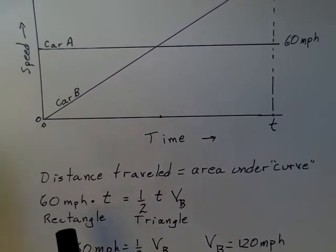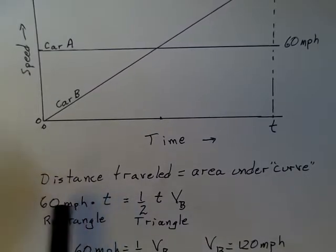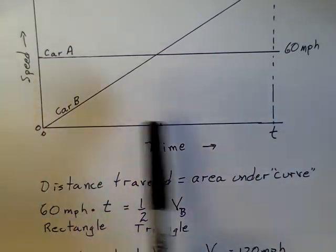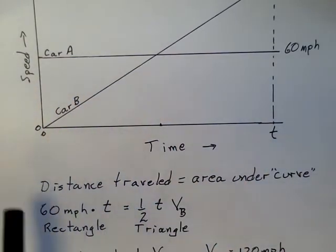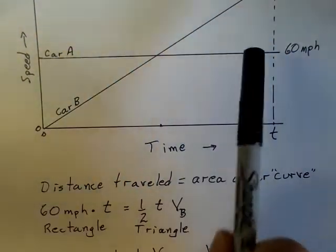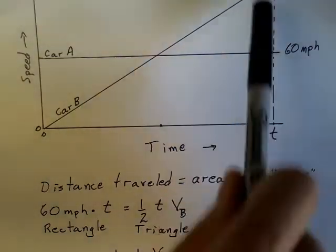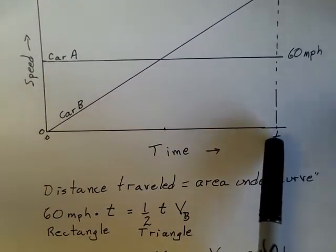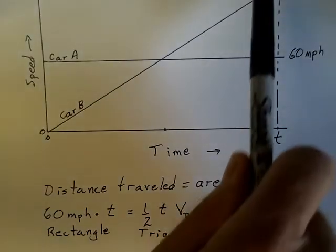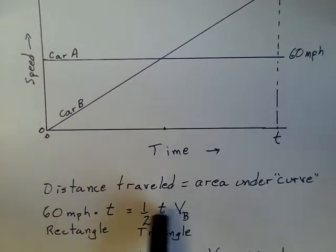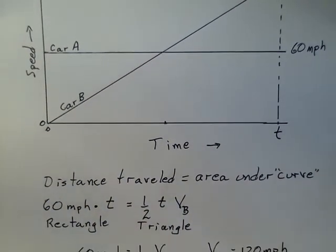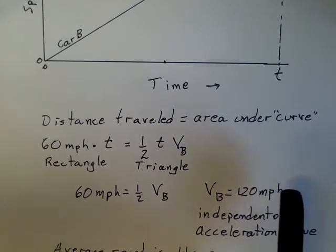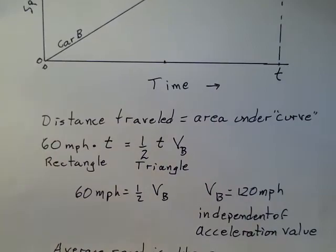What's interesting about this is that the distance traveled is the area under a curve on a graph of velocity versus time. For the case of car A, it's a rectangle. 60 miles per hour is the height of the rectangle. Time T is the long side of the rectangle. For car B, it's a triangle. And the area of a triangle is 1 half times the base times the height. So 1 half, the base is T, and the height is the final velocity of car B. The T's cancel, multiply by 2. And you find that the speed of car B is 120 miles per hour. And there's no acceleration factor in this answer. This final velocity of car B is independent of the acceleration factor.